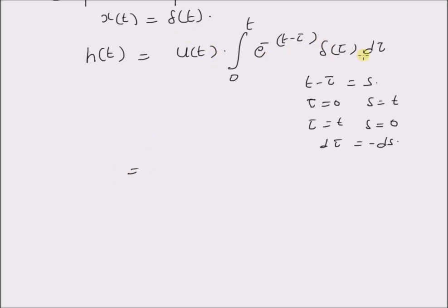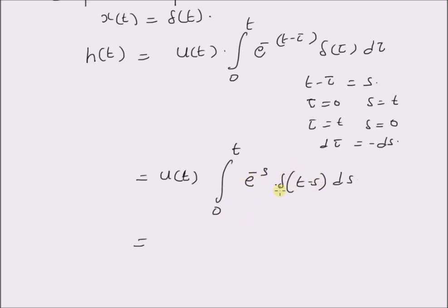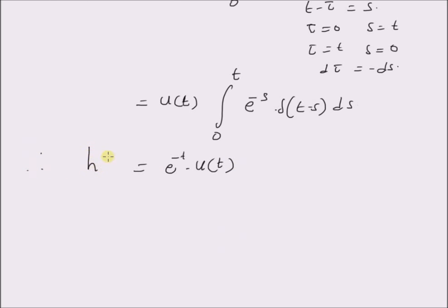By using this transformation we can rewrite the product as u of t into the integral from 0 to t of e power minus s delta of (t minus s) d s. By using the shifting property we can clearly see that this integral is equal to e power minus t, so we have e power minus t multiplied by u of t. Therefore the impulse response h of t is equal to e power minus t multiplied by u of t.